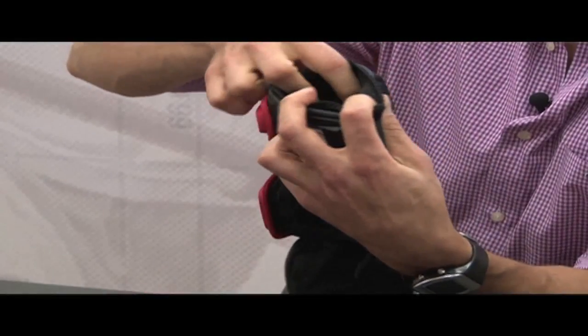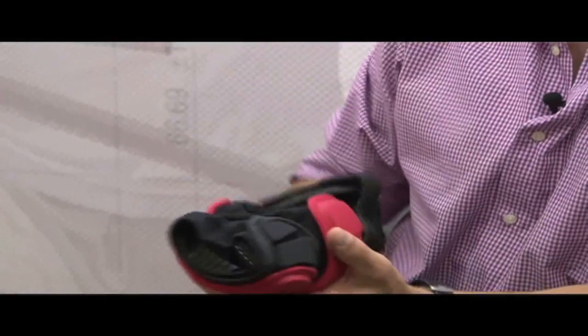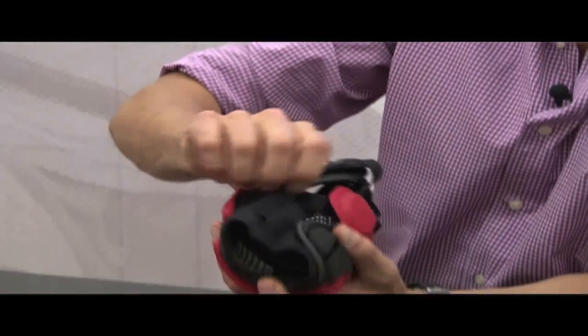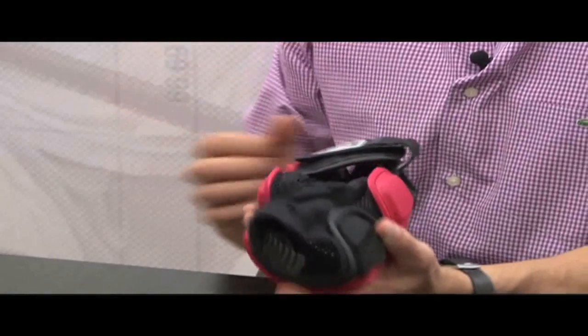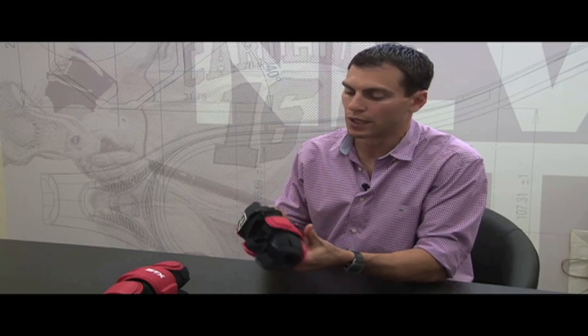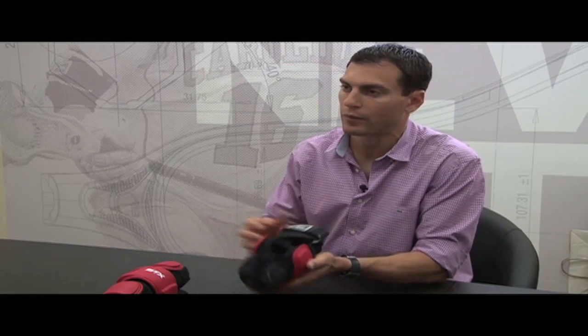Inside the sleeve we put what we call silicone nubs on the inside to prevent slippage. For lacrosse players, nothing's more annoying than a pad slipping down when you're playing - you constantly have to move it, readjust it. We try to limit that by putting those nubs on the inside, both in the top and the bottom part of the pad.